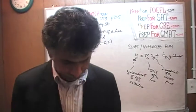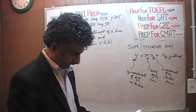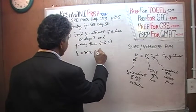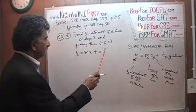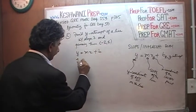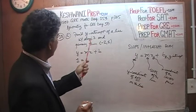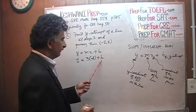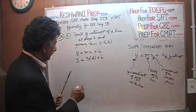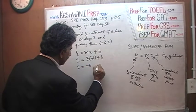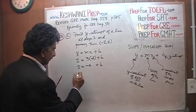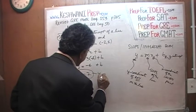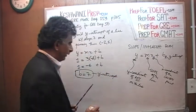So, y equals mx plus b. Our point is negative 2 and 1, so y equals 1. The slope is 3, and the x-coordinate is negative 2, and b represents the y-intercept. Negative 2 times 3 is negative 6, so 1 equals negative 6 plus b. Bring the 6 to the other side, and b equals 7. That is our y-intercept.